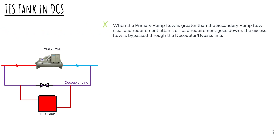When the primary pump flow is greater than the secondary pump flow, that is when the load requirement goes down, the excess flow is bypassed through the decoupler line. Please note that the decoupler line is also known as the bypass line.